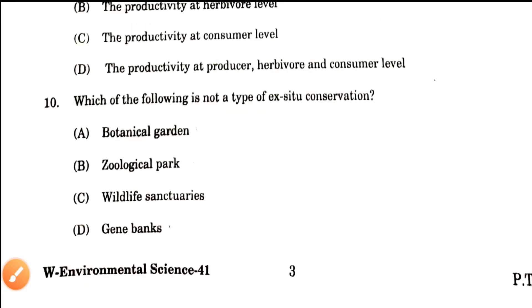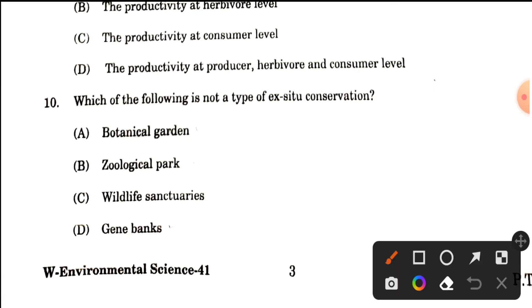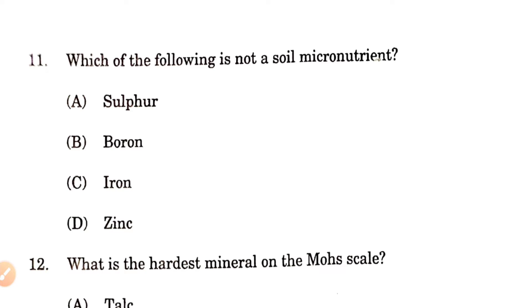Question number 10: Which of the following is NOT a type of ex-situ conservation? Since it asks what is NOT ex-situ, the answer will be an in-situ conservation method. Wildlife sanctuaries are in-situ conservation. So option C — wildlife sanctuaries — is the correct answer. The rest are all ex-situ conservation methods.